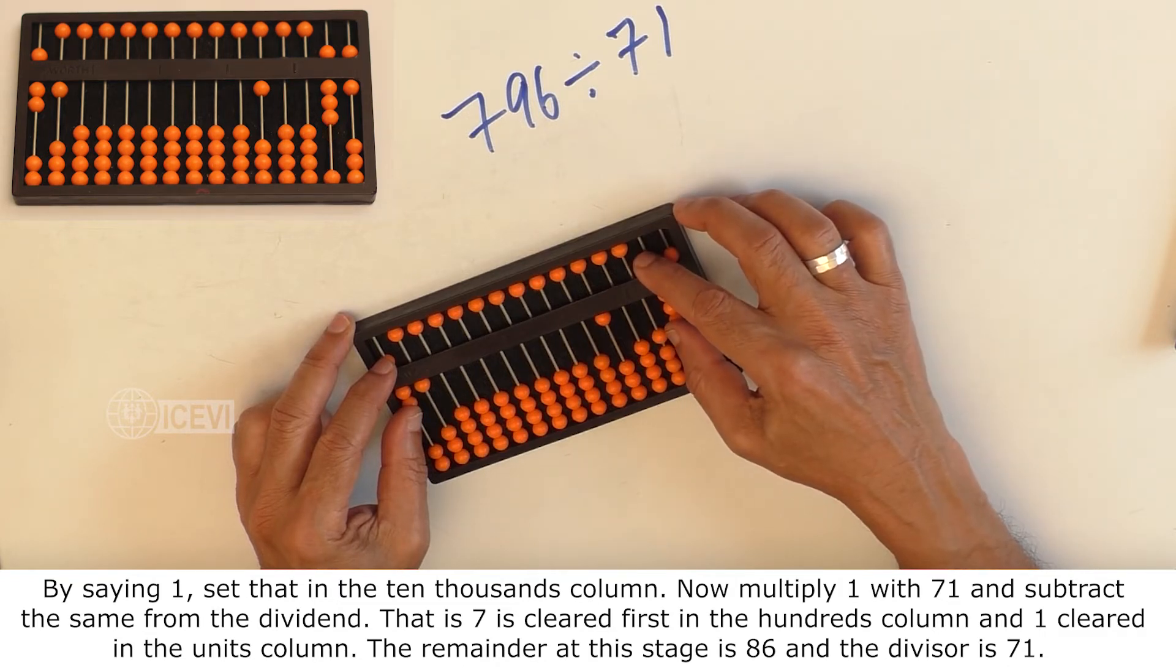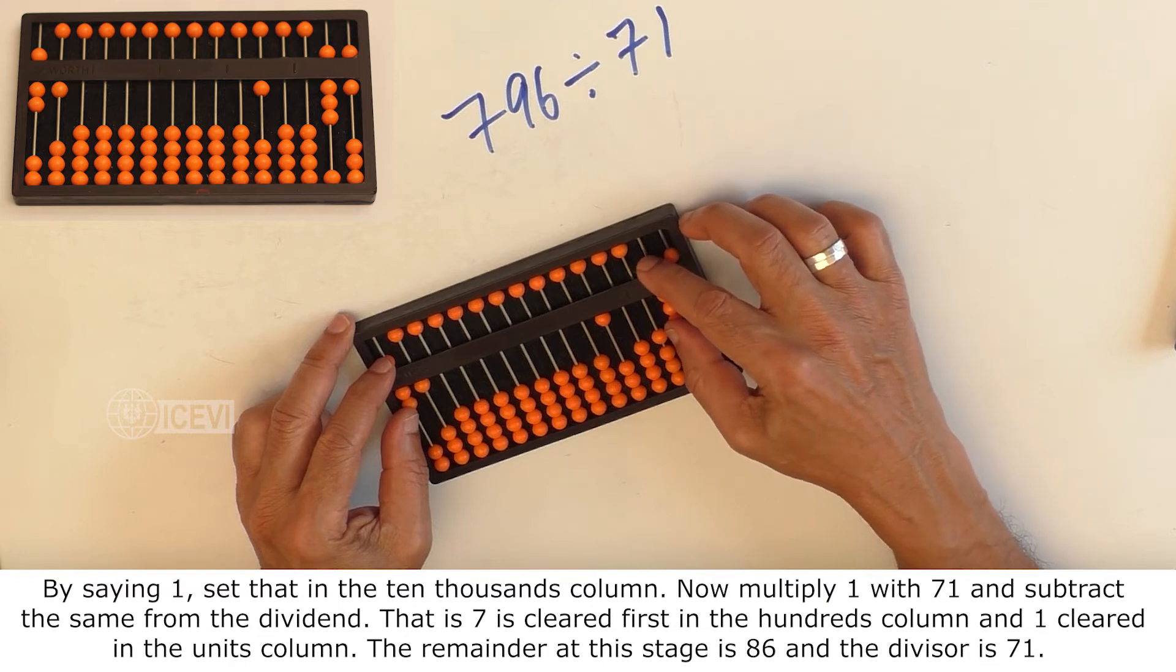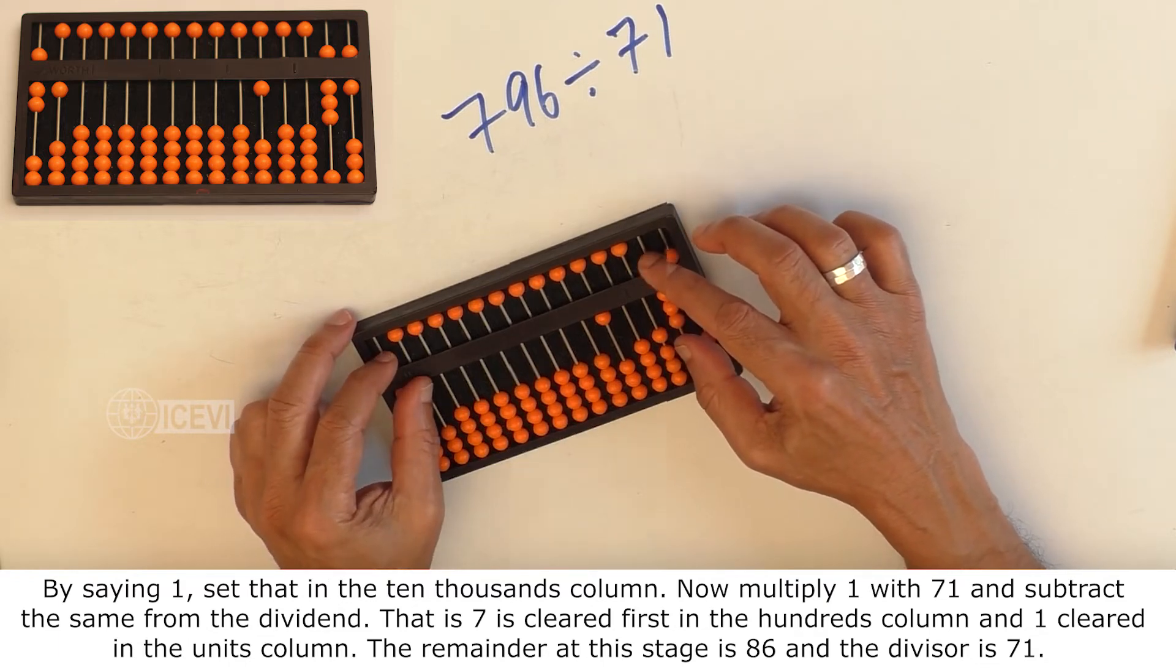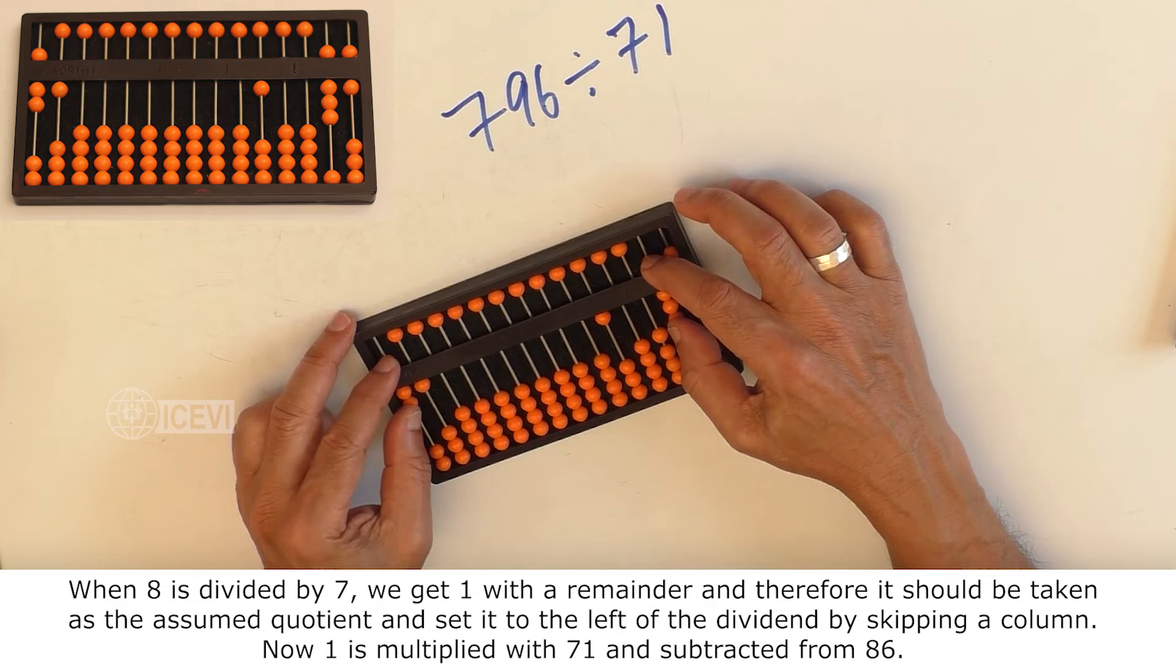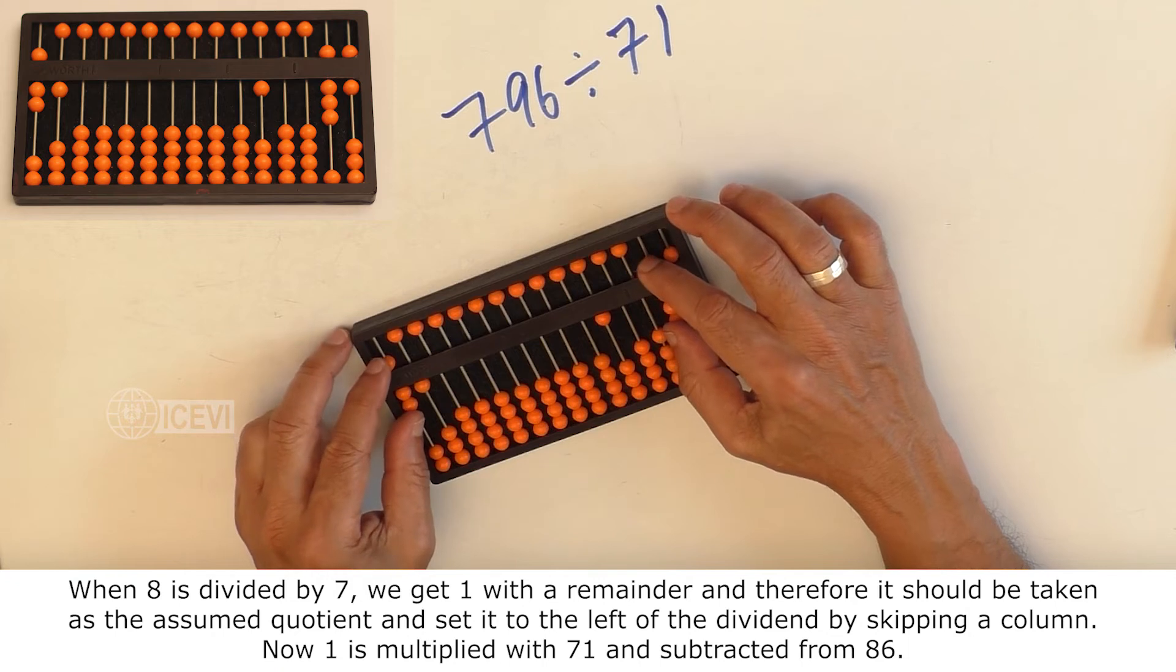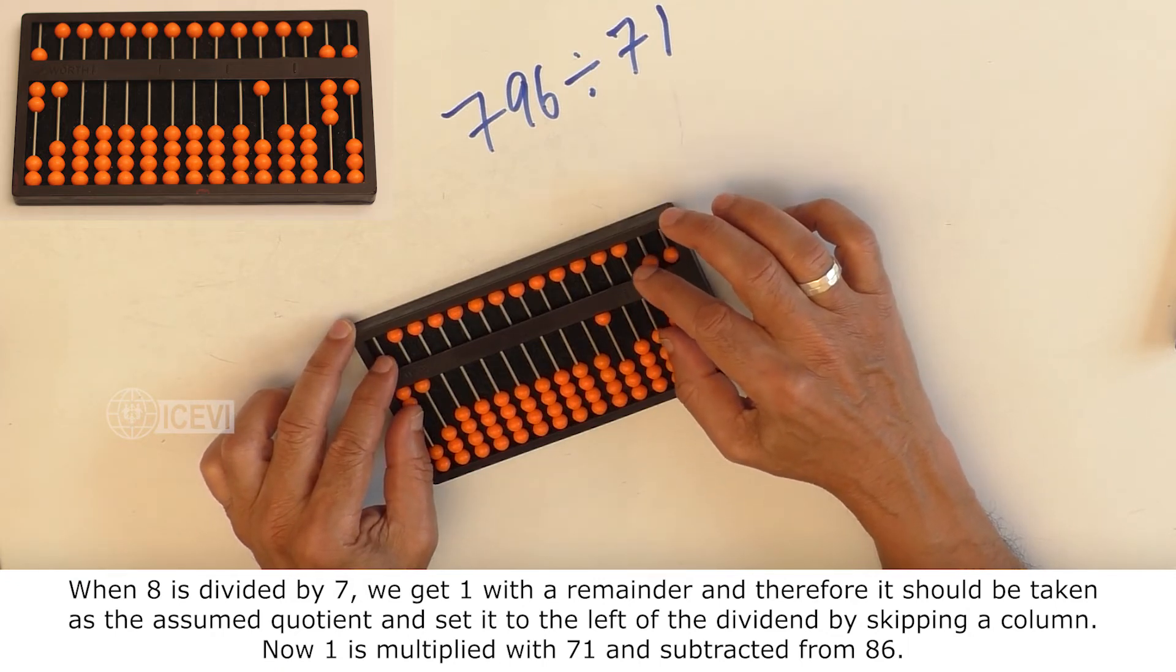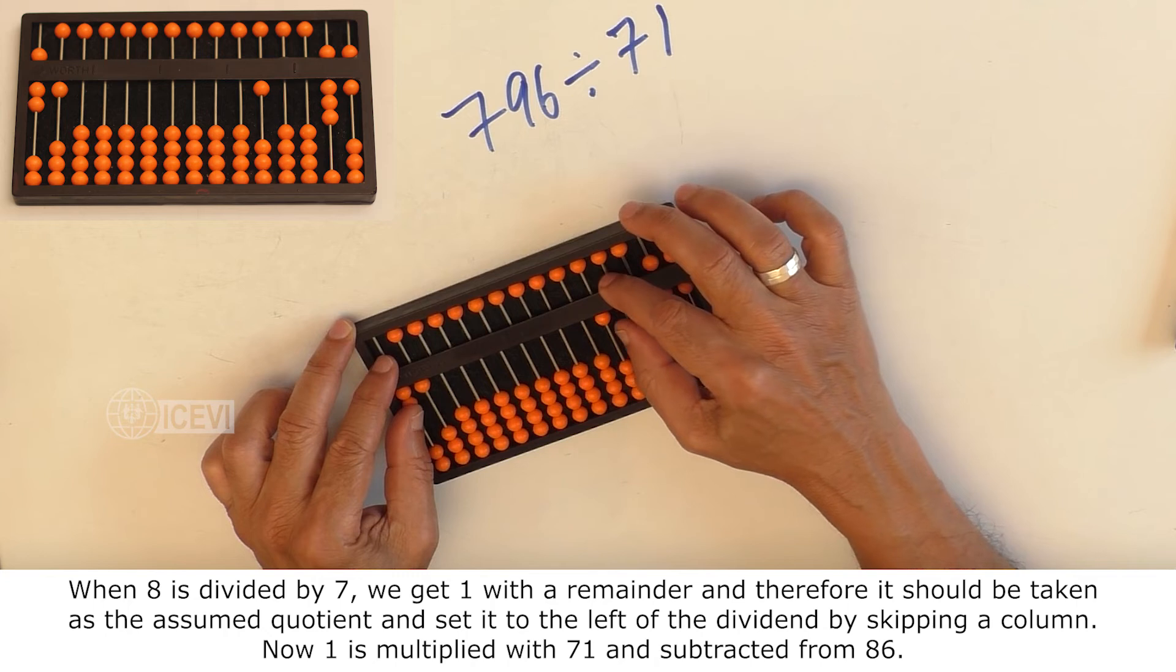The remainder at this stage is 86 and the divisor is 71. When 8 is divided by 7, we get 1 with a remainder and therefore, it should be taken as the assumed quotient.